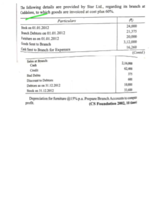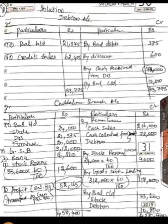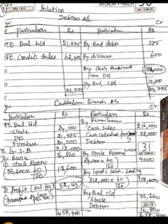Since the question specifies Kadalur branch, we write this as the Kadalur Branch Account — debit particulars and rupees, credit particulars and rupees. Don't forget the format, as the format is also important. Now proceed with the problem entries.